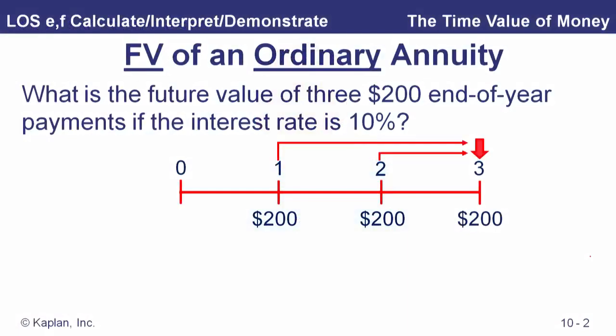Now let's look at one where we've got some payments. When we talk about an ordinary annuity, that means an annuity that starts one period from now — first payment one period from now. For it to be an annuity, the payments have to be equally spaced periodically and also they have to be equal amounts. So here, say we've got an account — we're going to deposit $200 into it a year from today, then another $200 a year later, and another $200 a year after that.